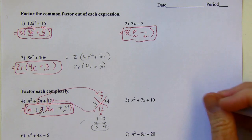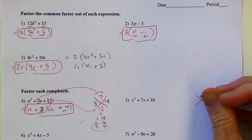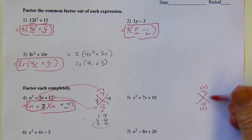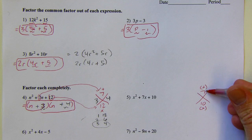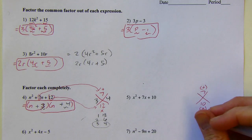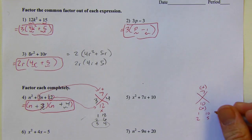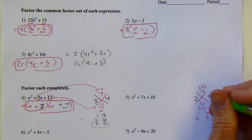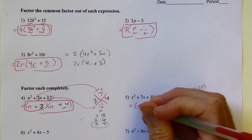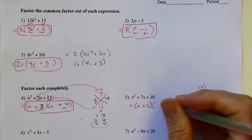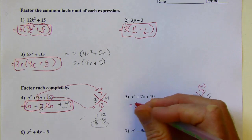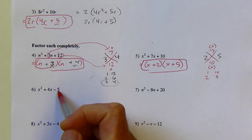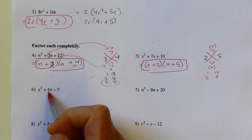Next one — I'll set up a diamond problem again. The 7 goes on top, the 10 goes on bottom. I usually start with the bottom because there are limited multiplication options. I've found my winning combo: it's going to be 2 and 5. That's what goes in the back of my parentheses. When I do these problems myself, I don't use diamond problems, but I'm doing that same thinking — two numbers that multiply to negative 5 and add to positive 4.